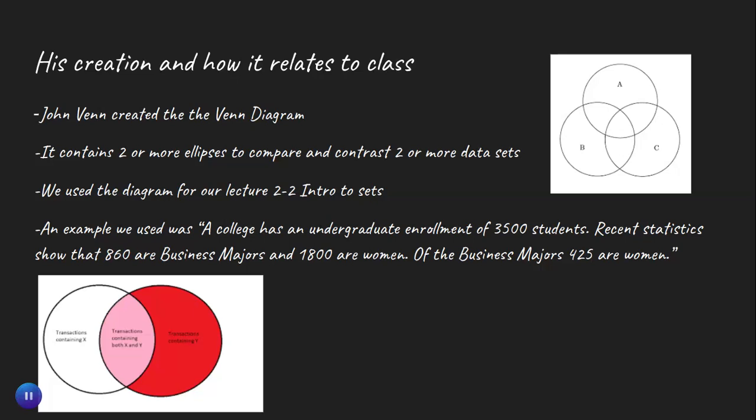An example we used was: a college had an undergraduate enrollment of 3,500 students. Recent statistics show that 1,800 are women, 860 are business majors, and of the business majors, 425 are women.